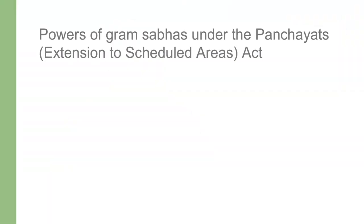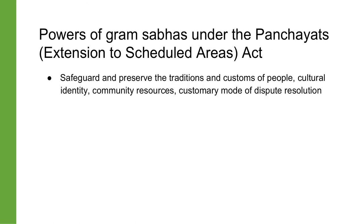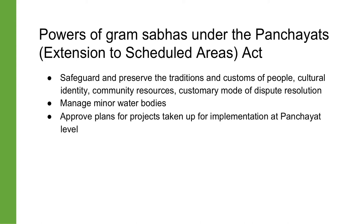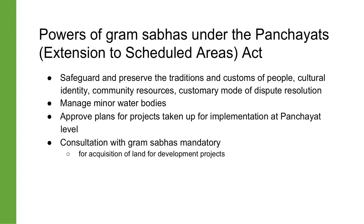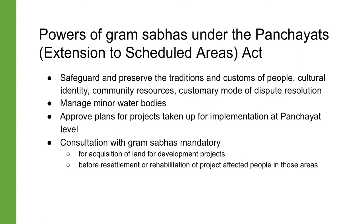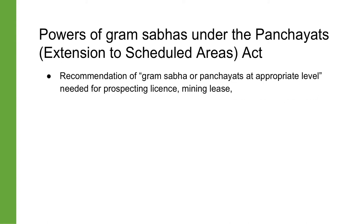Unlike Part 9, PESA clearly gave a central role to Gram Sabhas. Every habitation or group of habitations, or a hamlet or group of hamlets, comprising a particular community and managing its affairs in accordance with traditions and customs must have a separate Gram Sabha. PESA recognized several powers of the Gram Sabha, including powers to safeguard and preserve the traditions and customs of the people, their cultural identity, community resources, and the customary mode of dispute resolution; manage minor water bodies; and approve plans for projects at the panchayat level. Consultation with the Gram Sabha was made mandatory for the acquisition of any land for development projects and before resettlement or rehabilitation of project-affected people. No prospecting license, mining lease, or concession for the exploitation of minor minerals can be granted in Scheduled Areas without the recommendation of the Gram Sabha or panchayats at the appropriate level.